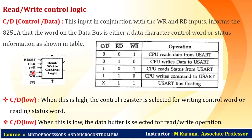The C/D-bar pin activates in conjunction with read and write signals to inform 8251A whether the word on the data bus is a data character, control word, or status information. When the signal is high, the control register is selected for writing a control word or reading a status word. When the signal is low, the data buffer is selected for read/write operations.